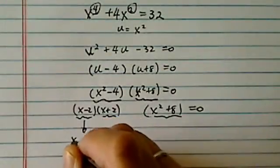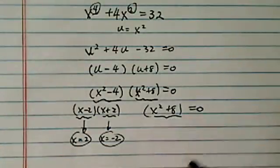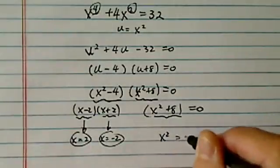This is a nice one, x = 2. So is this one, x = -2. Now let's take a look at x² = -8.